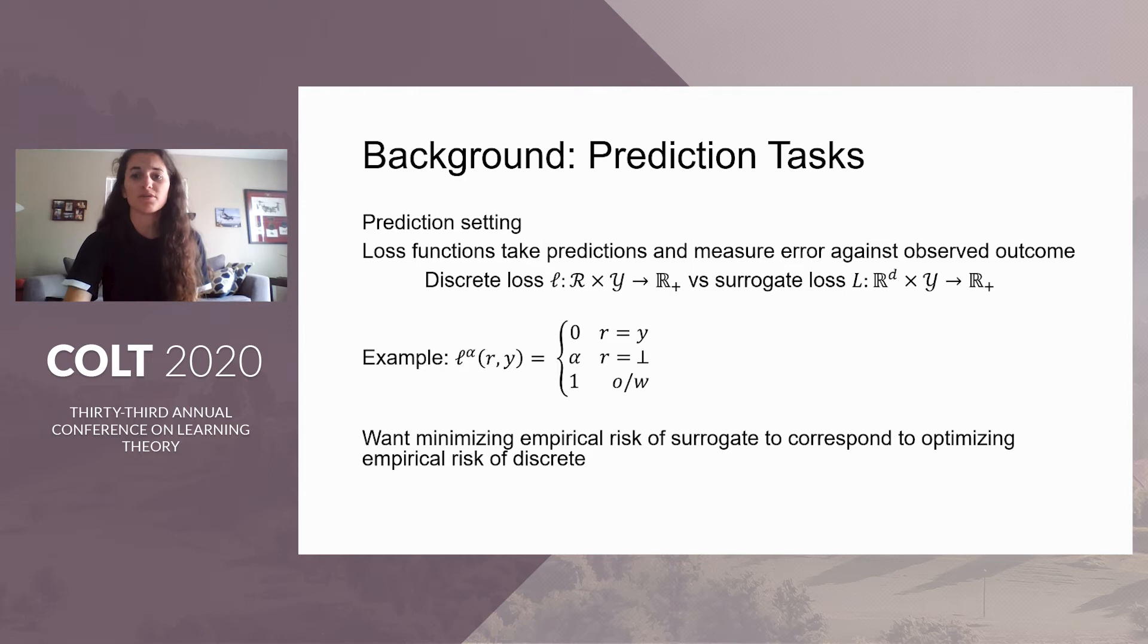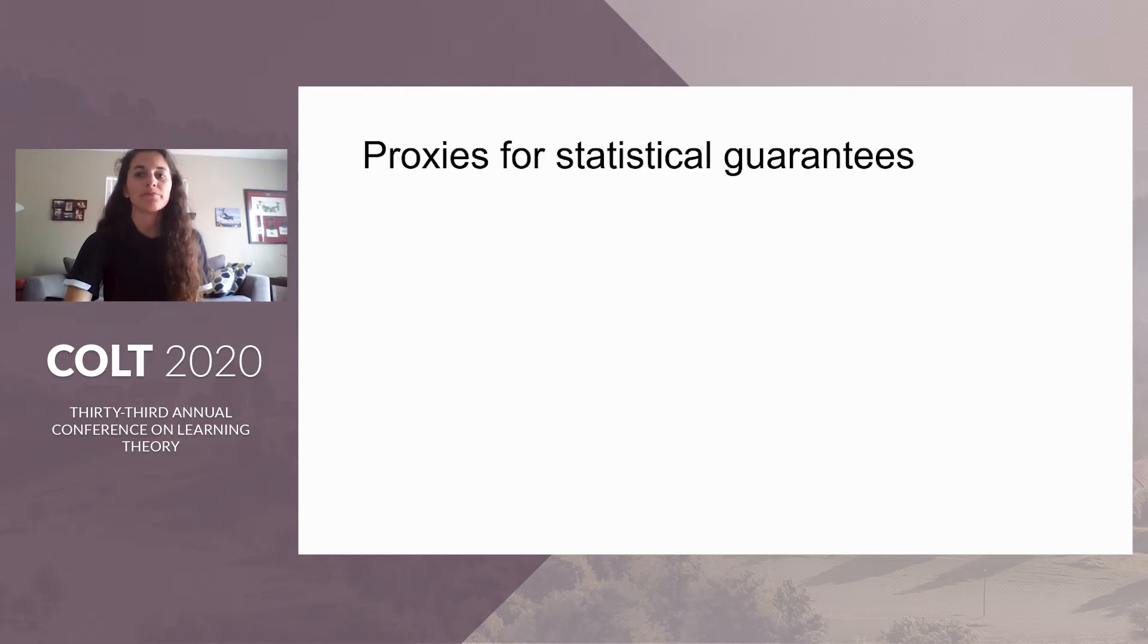Ideally, we want a surrogate such that minimizing empirical risk of the surrogate corresponds to minimizing empirical risk of discrete loss. In particular, we want the surrogate to be calibrated. But calibration is really a proxy. We want to optimize a surrogate with good empirical risk minimization bounds, and one requirement for such bounds is consistency.